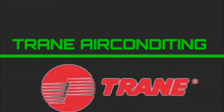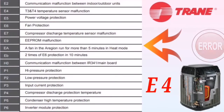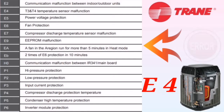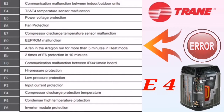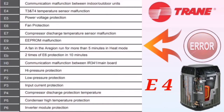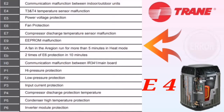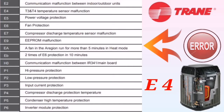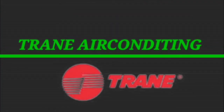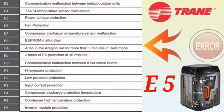The next error code is E4, which means T3 and T4 temperature sensor malfunctioning. First, check the placement of the sensor and the cable between the sensor and the PCB. Then check the resistance of the T3 and T4 temperature sensors — if the resistance is not good, the sensors need to be replaced. If the resistance is good, check the output supply coming to the sensor from the outdoor PCB. If it is not coming properly, the outdoor PCB is faulty and needs to be changed.